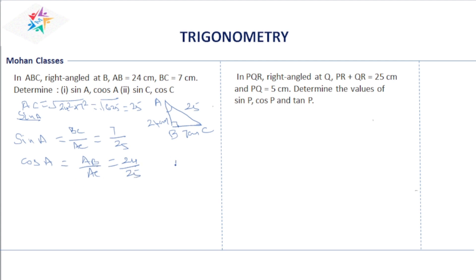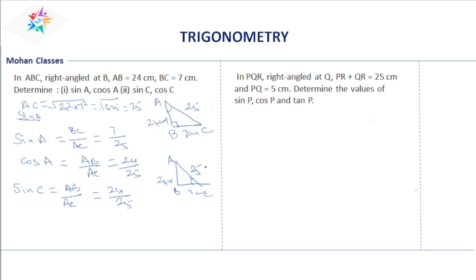Now for angle C, the opposite side is AB = 24 and the adjacent side is BC = 7. Sin C equals opposite AB divided by hypotenuse AC, that is 24/25. Cos C equals adjacent by hypotenuse, that is 7/25. These are all the ratios.